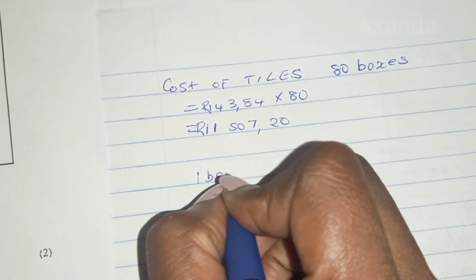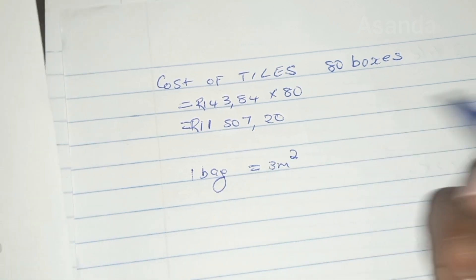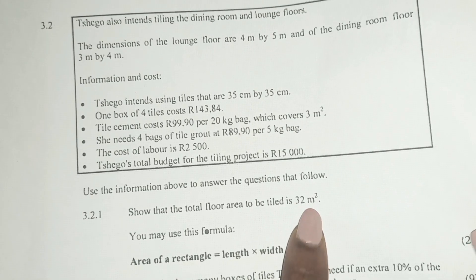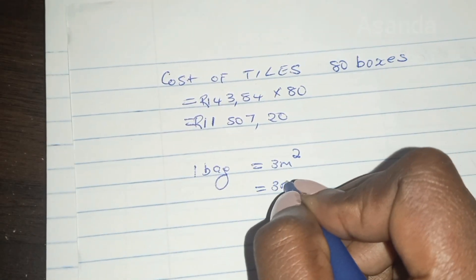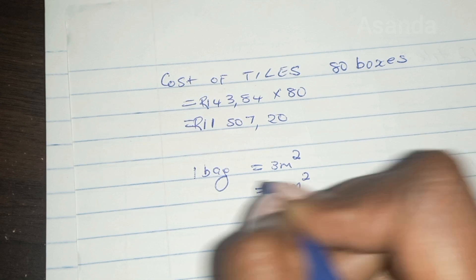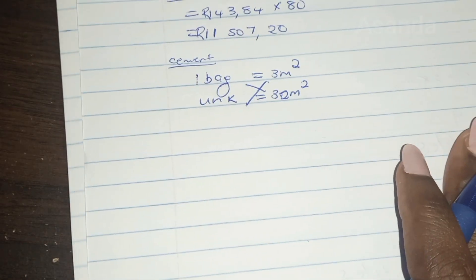One bag will only give us three meters squared. Now remember we have 32 meters squared. So we have to get how many bags. We'll just calculate and find out. So I'm not going to do the whole thing. I'm just going to show you that I did this for this part. So now we're doing the cement. We did the tiles. Now we're doing the cement.